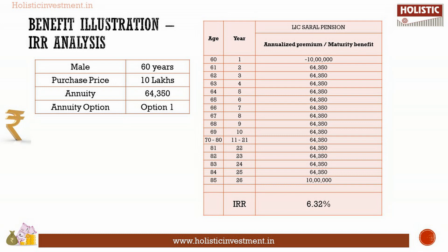A 60-year-old male buys LIC's RL Pension plan for Rs 10 lakhs — that is, the purchase price is 10 lakhs. He chooses Option 1, life annuity with 100% return of purchase price, and receives an annual annuity of Rs 64,350 throughout his lifetime.